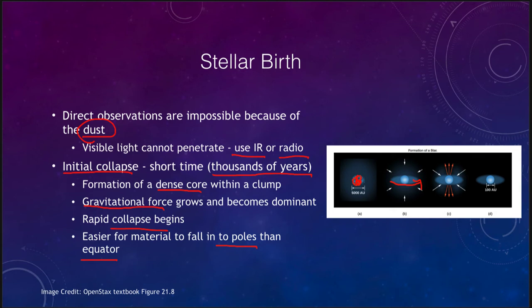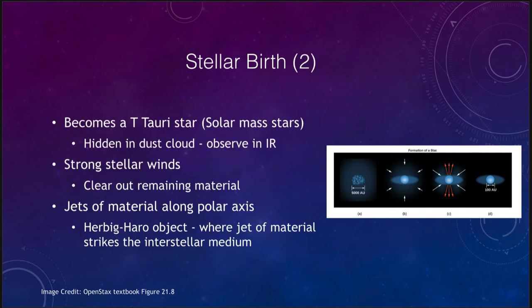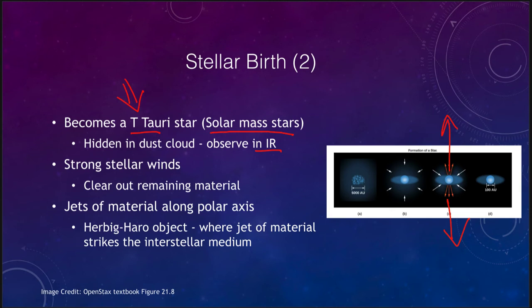Material rotating in the disk will have a much harder time losing that rotational energy, while material not having much rotation will compress more easily. The material will tend to collapse into a disk as clouds and bits of clouds collide and lose energy. For solar-mass stars, we begin to form what we call T Tauri stars, which are hidden in the dust clouds and seen in the infrared, with outflows of jets of material.